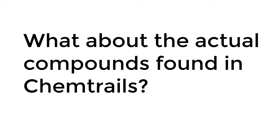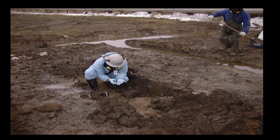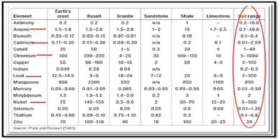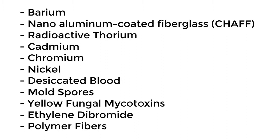But what about the actual compounds that are found in chemtrails? Over the past decade, testing of soils and areas known for chemtrails spraying has shown a potentially dangerous and poisonous brew, which includes barium, nano-aluminum coated fiberglass known as chaff, radioactive thorium, cadmium, chromium, nickel, desiccated blood, mold spores, yellow fungal mycotoxins, ethylene dibromide, and polymer fibers.